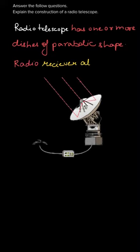First of all, we can see that a radio telescope has one or more dishes of parabolic shape. We can see this dish — it is parabolic in shape. A radio telescope consists of one or more dishes of this shape, and then there is a receiver. We'll be talking about the receiver part next.